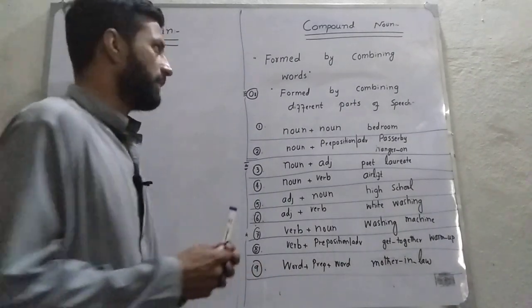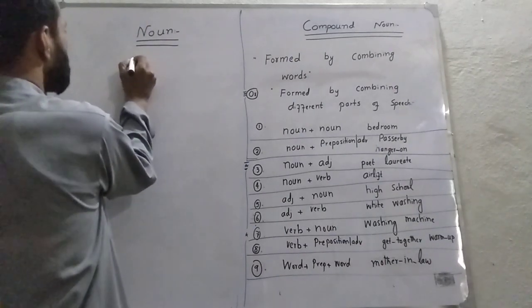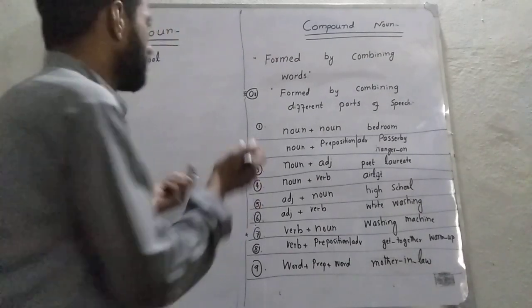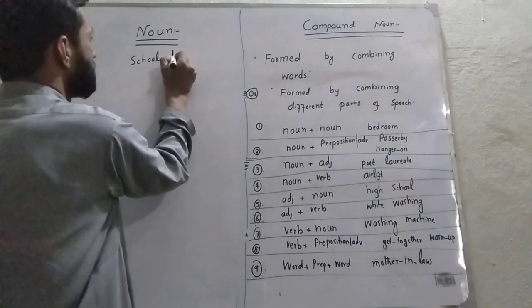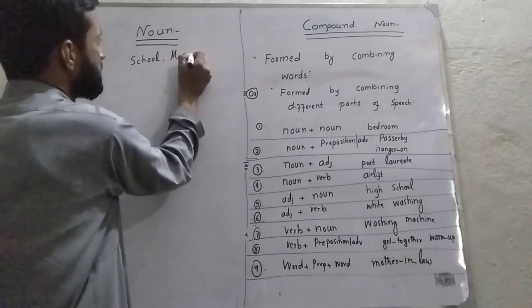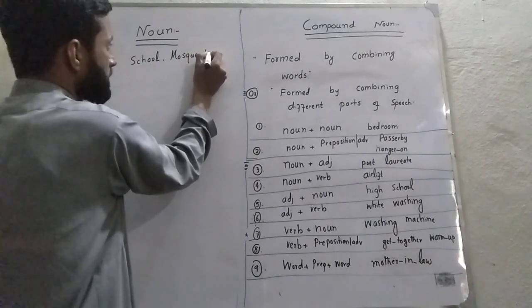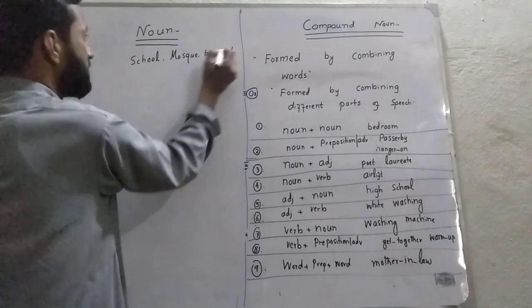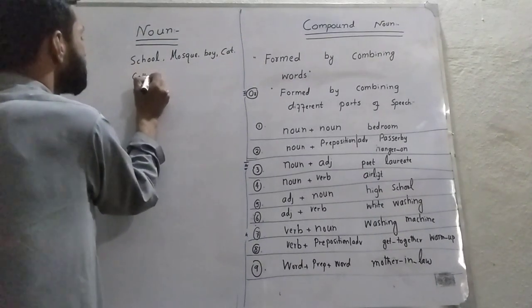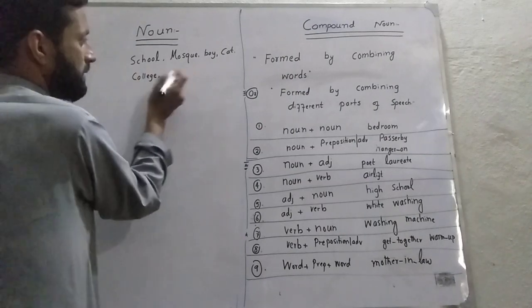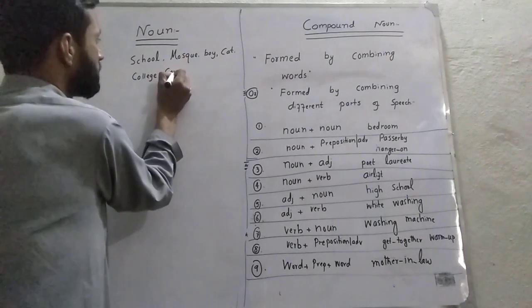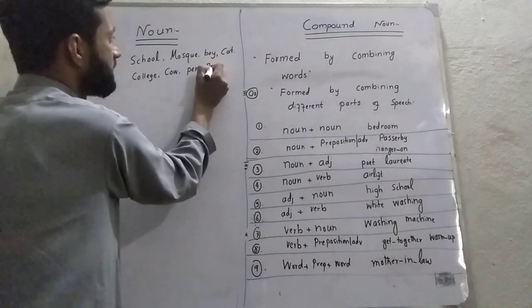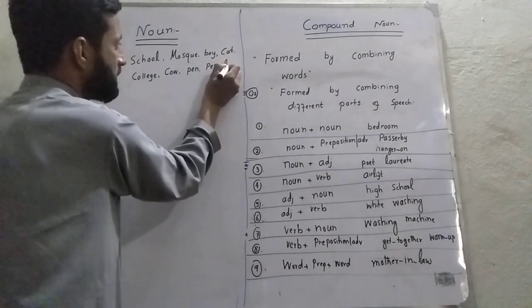If we think of things in our surrounding, I am taking some examples. There is a school, there is a mosque, there is a boy, there is a cat, there is a college, there is a cow, there is a pen, there is a pencil.